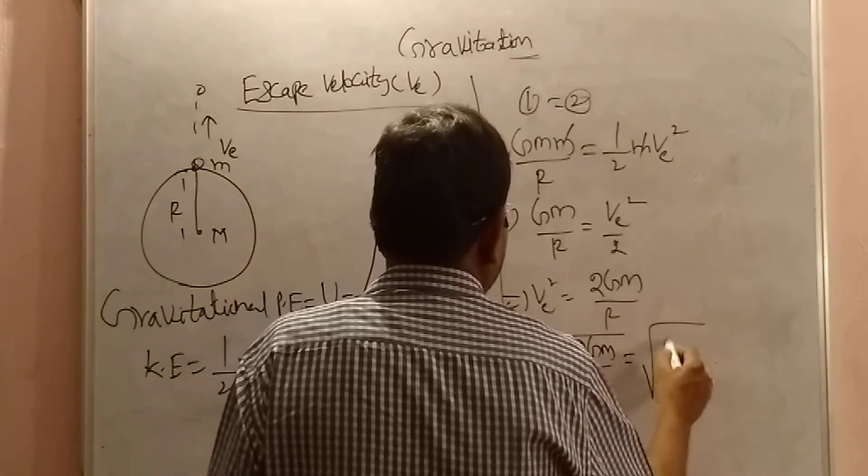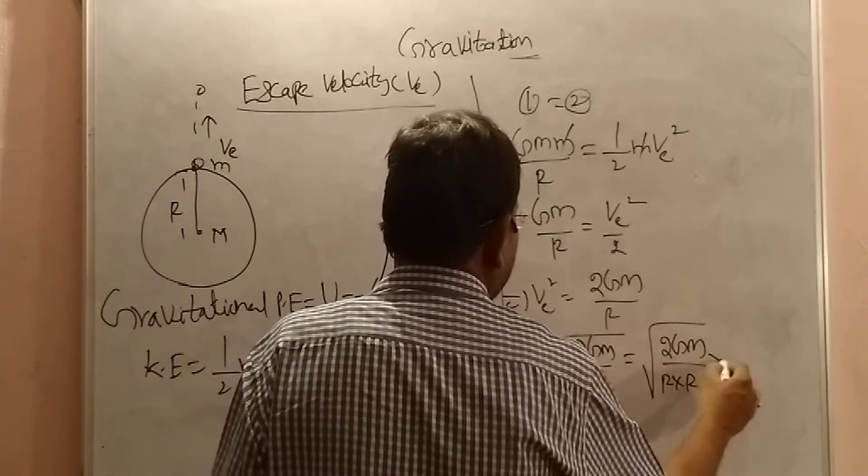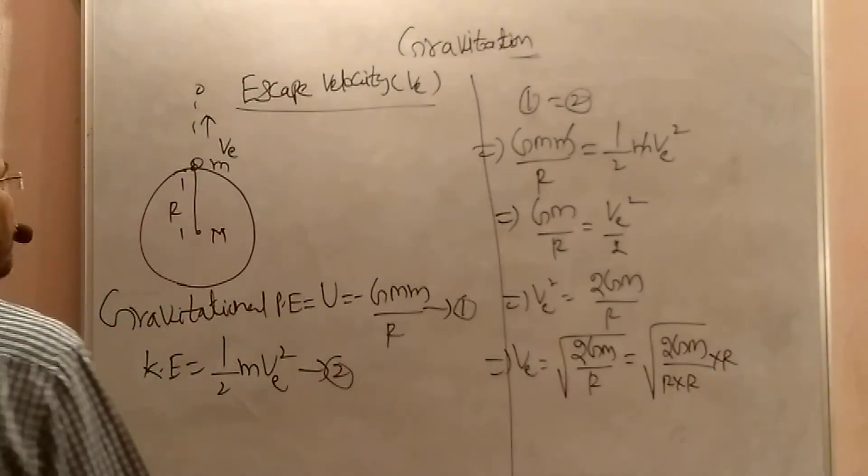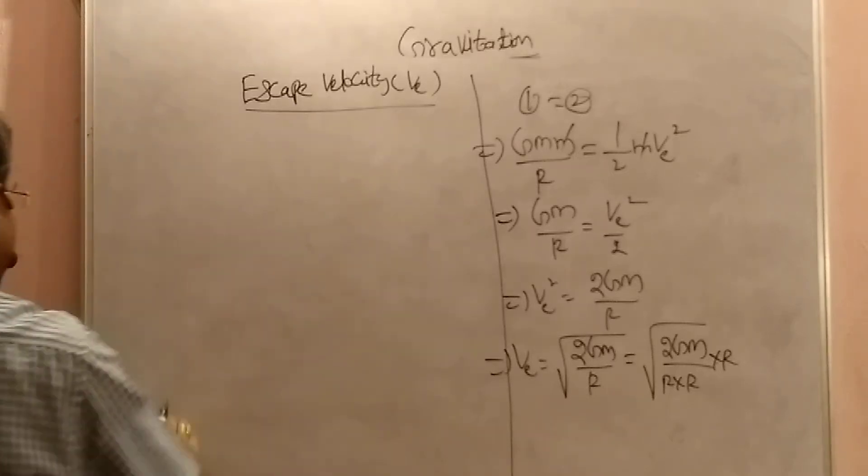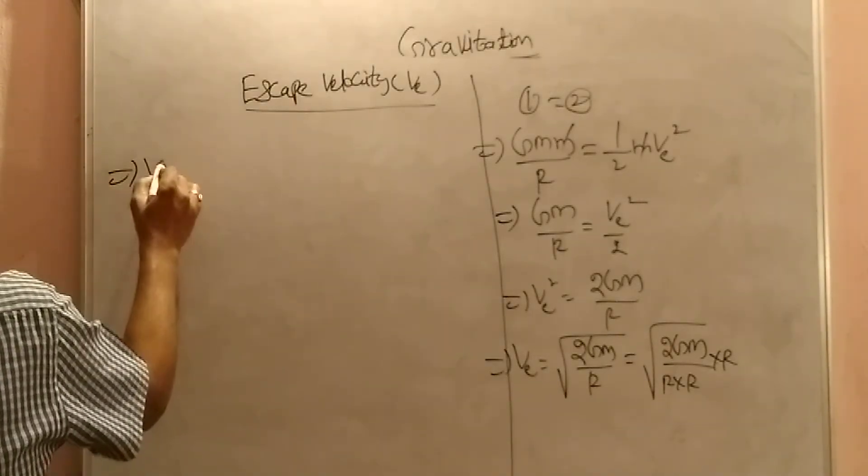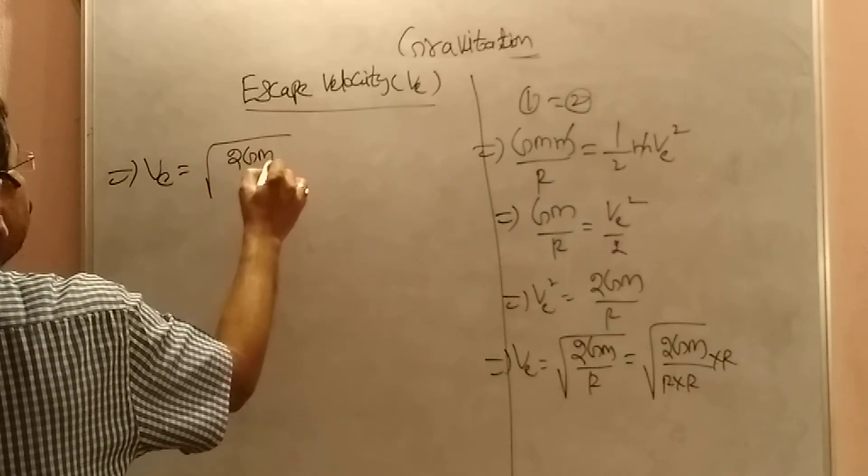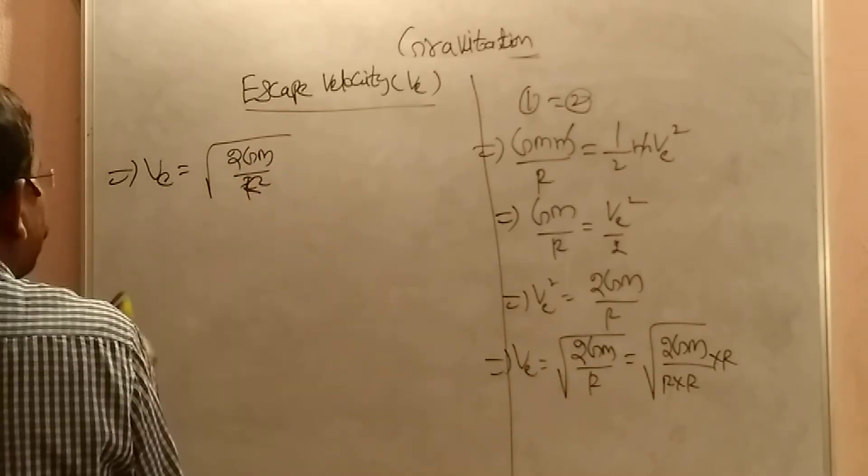Now, I am just modifying this. So 2 GM by r, dividing and multiplying. Now, what happens finally? Similarly, this implies v equals to square root of 2 into GM by r square into r.